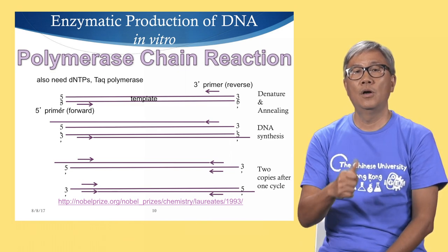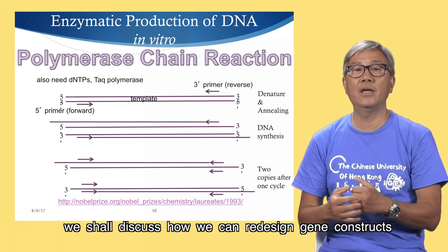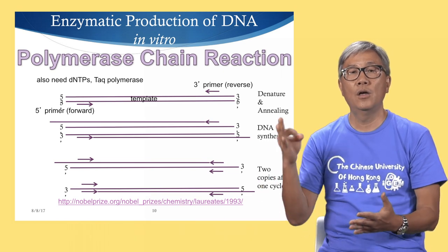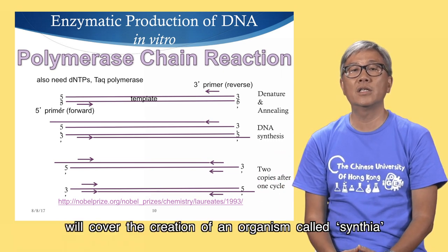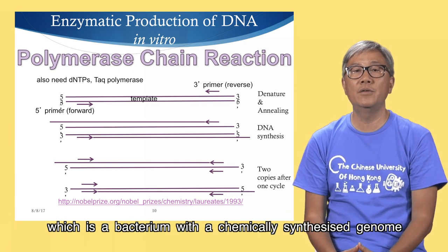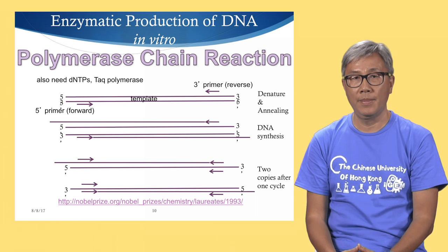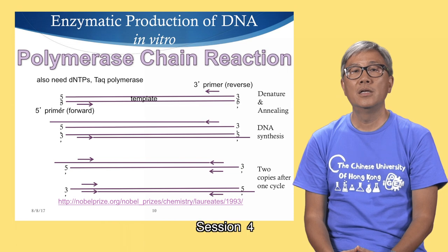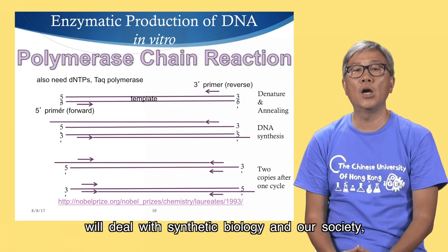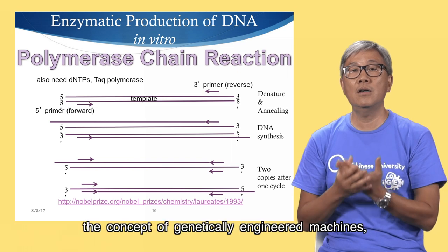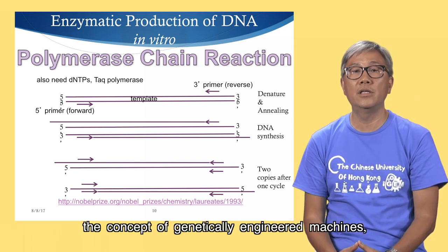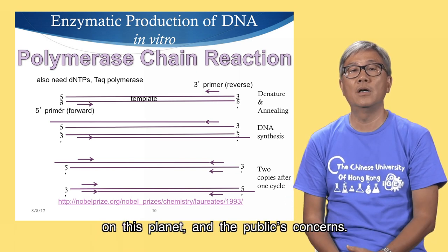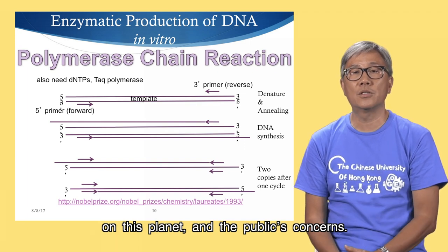In section 2, we shall discuss how we can redesign gene constructs and put them into a chassis. Section 3 will cover the creation of an organism called Cynthia, which is a bacterium with a chemically synthesized genome, and look at genetically engineered machines. Section 4 deals with synthetic biology and our society — the concept of genetically engineered machines, how they can contribute to solving problems on this planet, and the public's concerns.